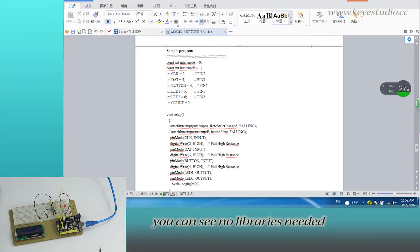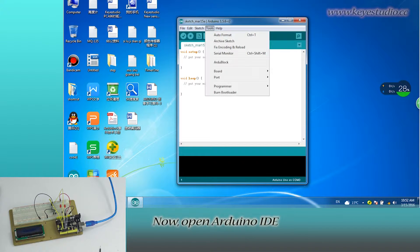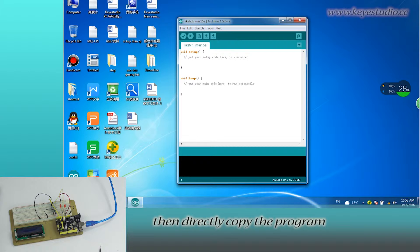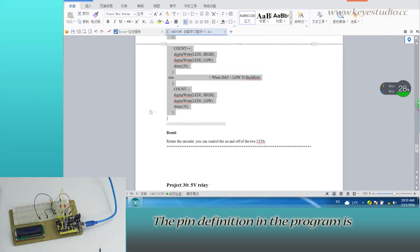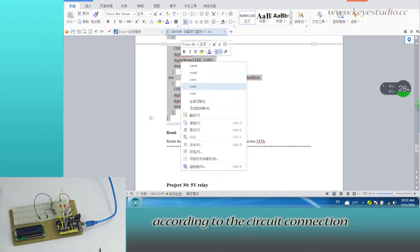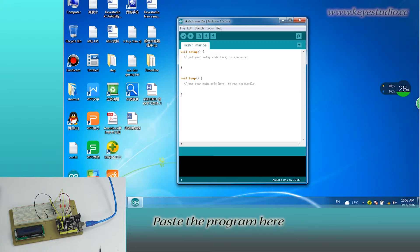Now, open Arduino IDE. Select the board and COM port. Then, directly copy the program from the supporting file. The pin definition in the program is according to the circuit connection. Paste the program here.